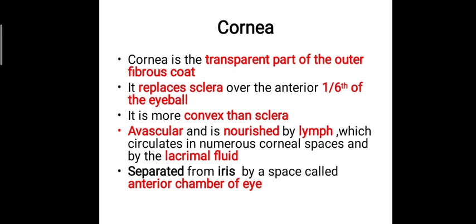The cornea is the transparent part of the outer fibrous coat, which replaces the sclera over the anterior one-sixth of the eyeball. It is more convex compared to the sclera and is avascular, nourished instead by lymph circulating in numerous corneal spaces and by lacrimal fluid. Because it is avascular, the cornea can be transplanted to another person without complications.